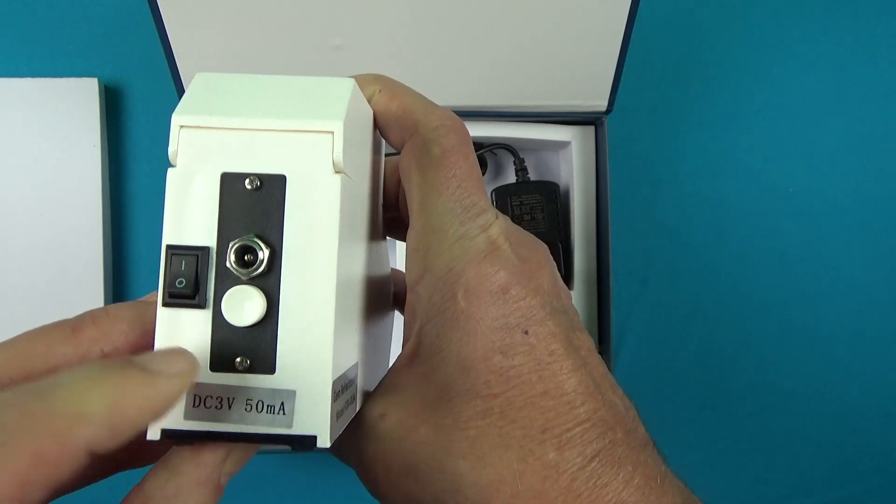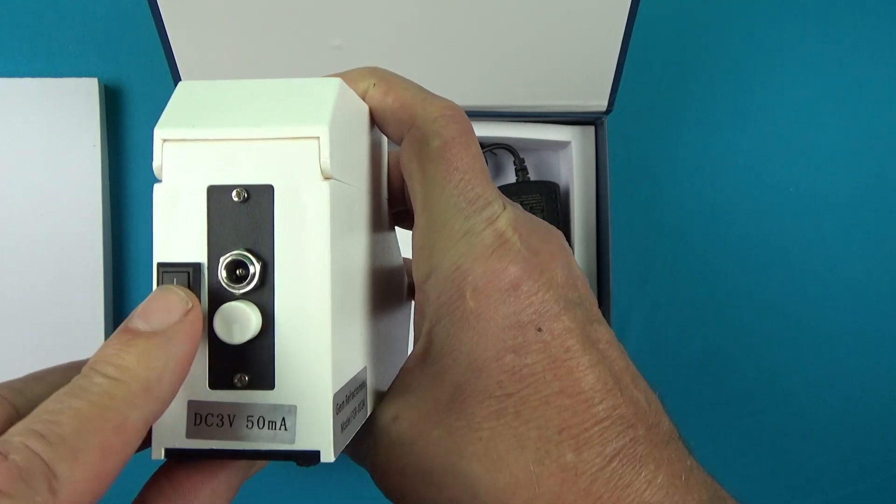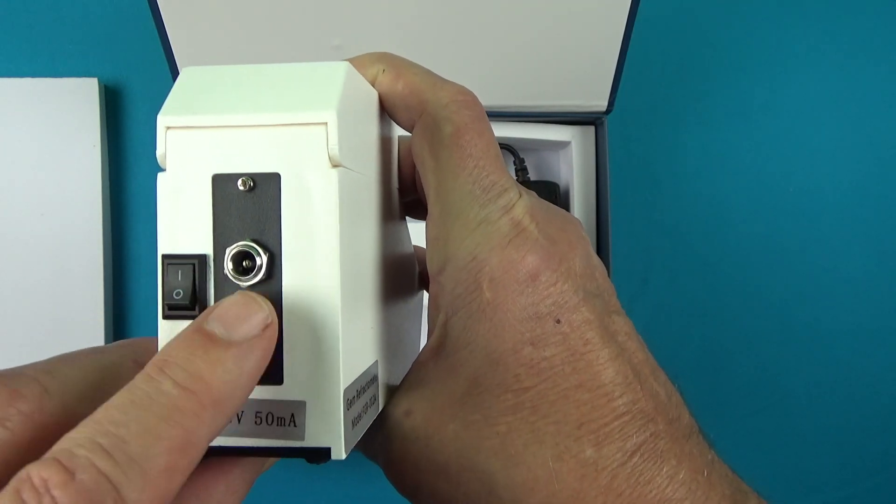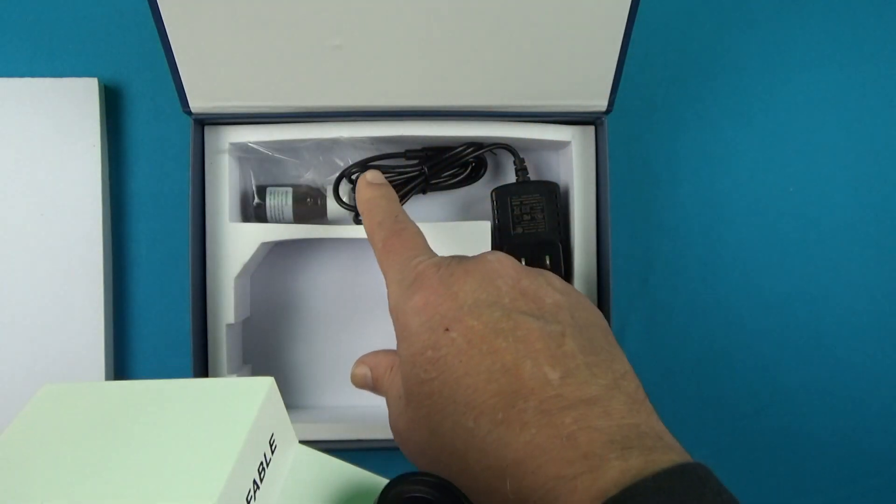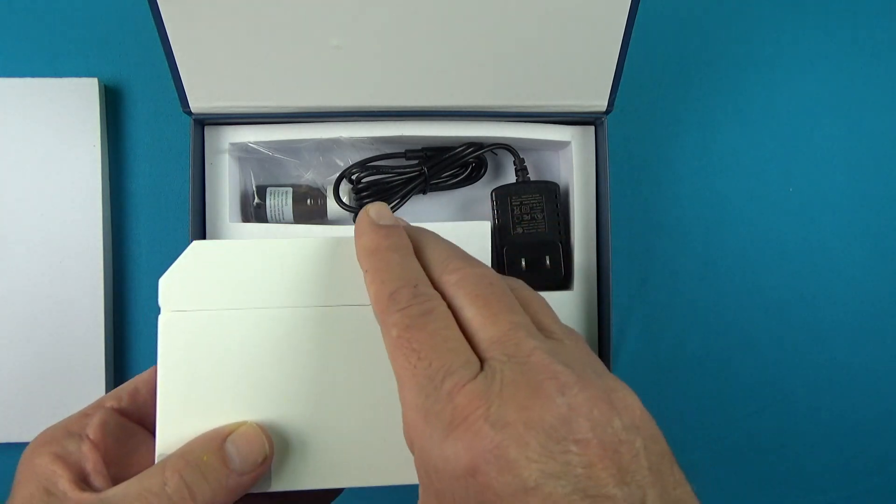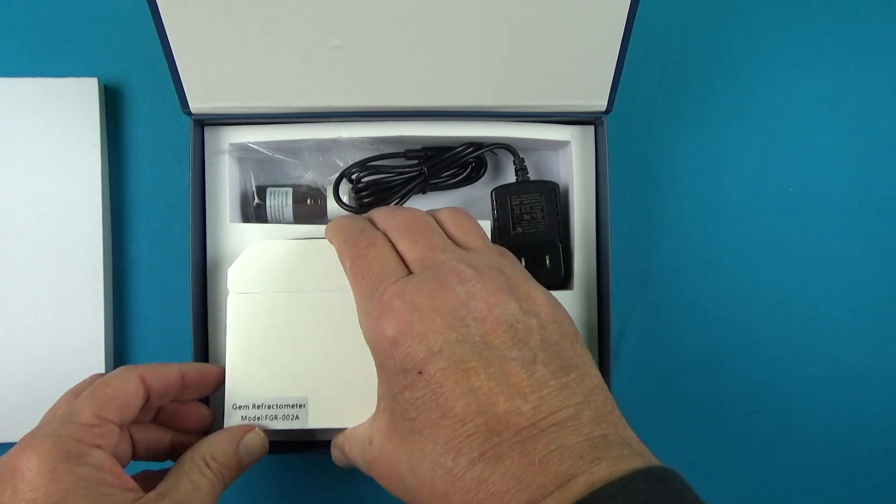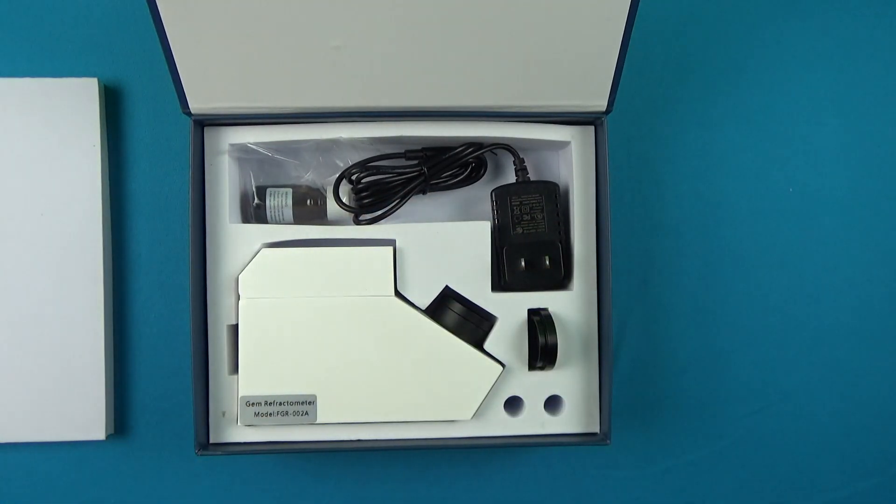On the back, you've got your power source plug-in, your power switch, and your intensity control. The white switch is the intensity of the light. You've got your RI liquid, your power cord, and you're ready to go.